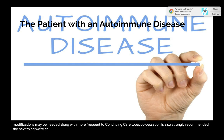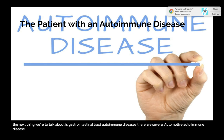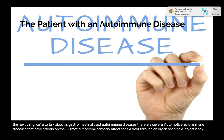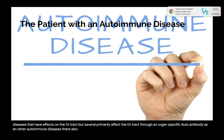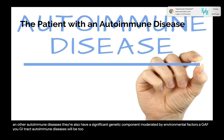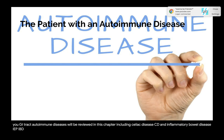Gastrointestinal tract autoimmune diseases: several autoimmune diseases primarily affect the GI tract through organ-specific autoantibodies and have a significant genetic component moderated by environmental factors. Three GI tract autoimmune diseases will be reviewed: celiac disease (CD), Crohn's disease, and ulcerative colitis (UC).